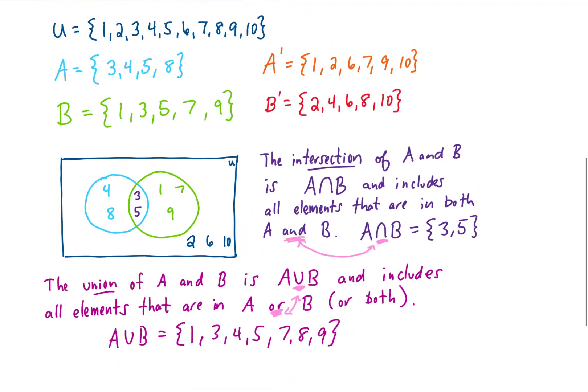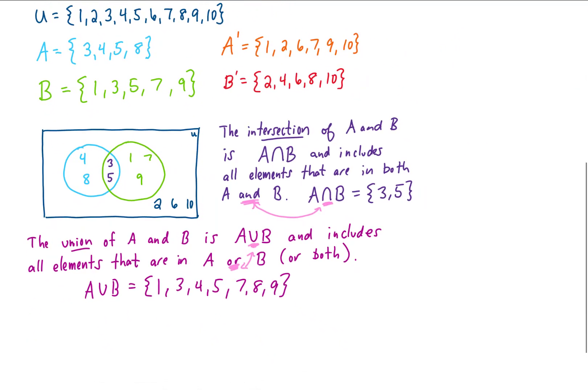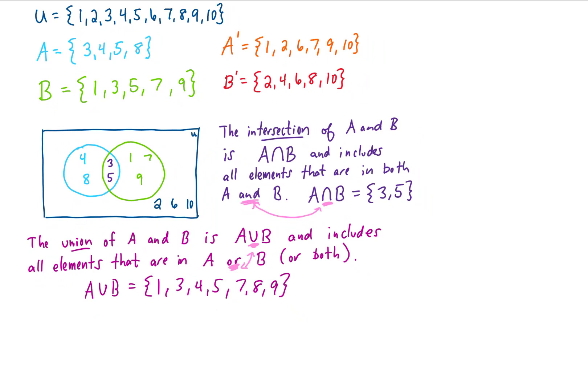Now why don't I zoom out a little bit to make a little bit of space and we can do a few more examples. What if I asked you to find A union B complement? Well what this notation means is we need to find the union of A and B first and then take the complement of that. Well we found A unioned with B right here. So the complement of this set is everything that's not in this set, which is just 2, 6, and 10.